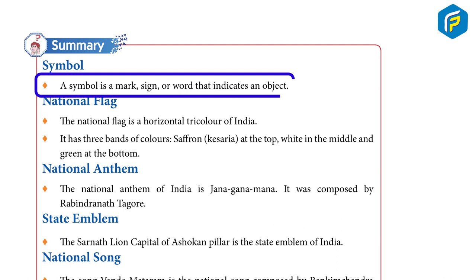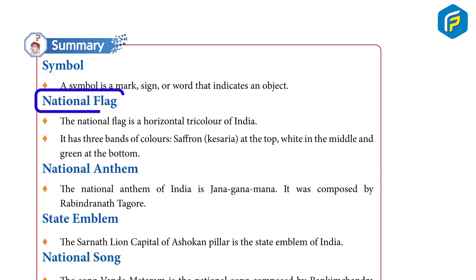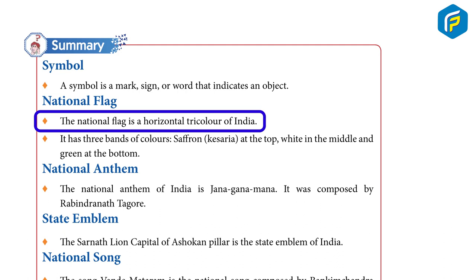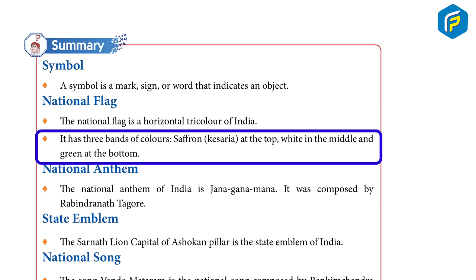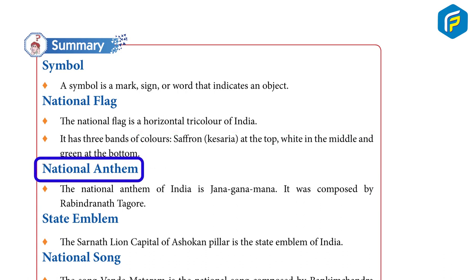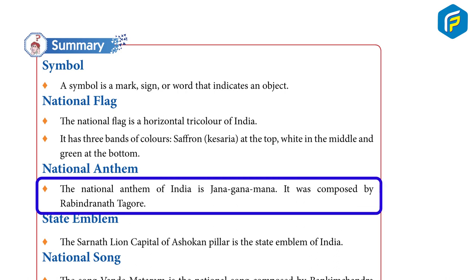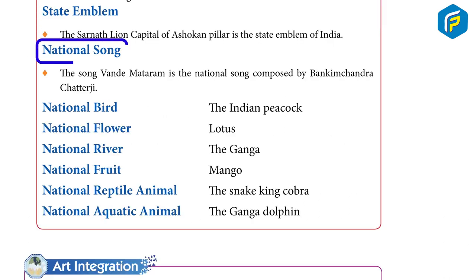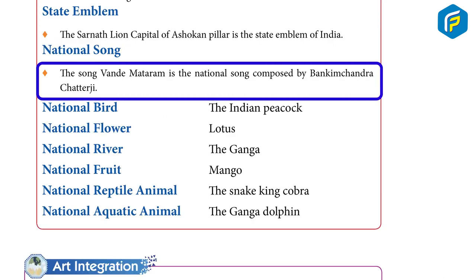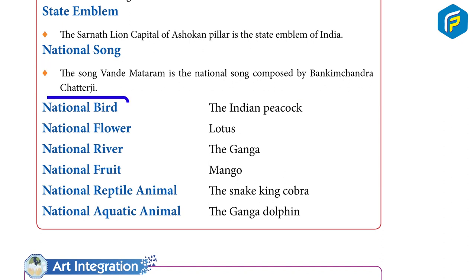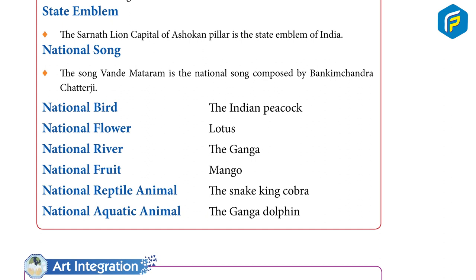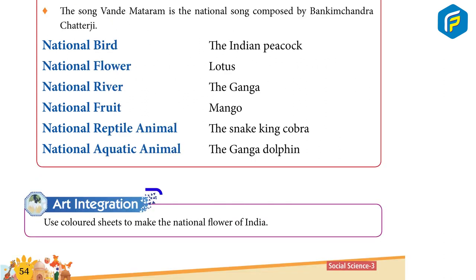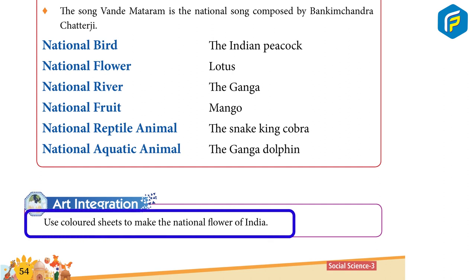Summary — Symbol: A symbol is a mark, sign or word that indicates an object. National Flag: The national flag is the horizontal tricolor of India with three bands — saffron (kesaria) at the top, white in the middle, and green at the bottom. National Anthem: Jana Gana Mana, composed by Rabindranath Tagore. State Emblem: The Sarnath Lion Capital of Ashoka. National Song: Vande Mataram, composed by Bankim Chandra Chatterjee. National Bird: Indian Peacock. National Flower: Lotus. National River: Ganga. National Fruit: Mango. National Reptile Animal: King Cobra. National Aquatic Animal: Ganga Dolphin.